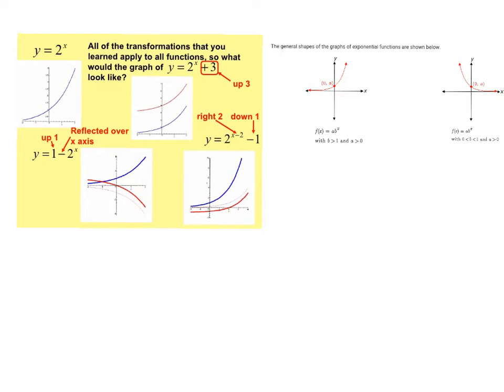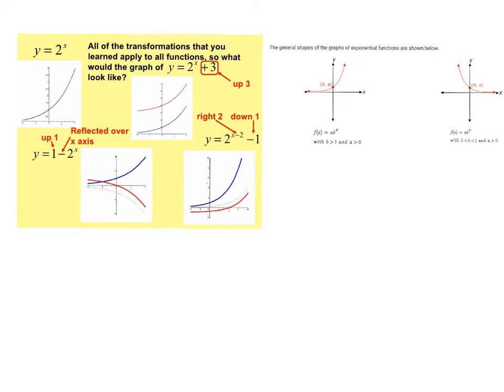The first thing we're going to look at is what a basic graph of an exponential function looks like. It starts out pretty flat and then starts to increase very rapidly. To figure out where it goes through the y-axis, that's going to be the coefficient in front — the number that's in front but not being raised to the x. So here there's no number in front, it's just a one, which is why it goes through the y-axis at one.